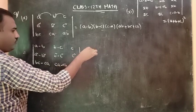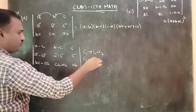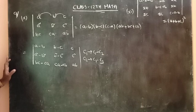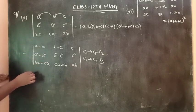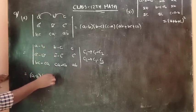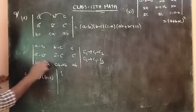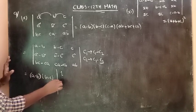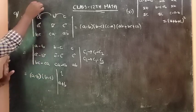Column 1 by column 1 minus column 2; column 2 by column 2 minus column 3. Then taking A minus B from column 1 and B minus C from column 2. Note that A squared minus B squared equals A minus B times A plus B. Taking C common.